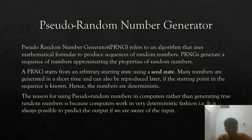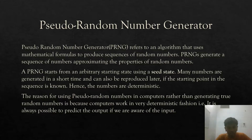A PRNG algorithm starts from an arbitrary starting state called a seed — that is, some initial value which is entered into the computer by some means. For example, it can be entered by using the total number of seconds which have passed from some particular date, and we can use this value as a seed for the pseudo-random number generator.